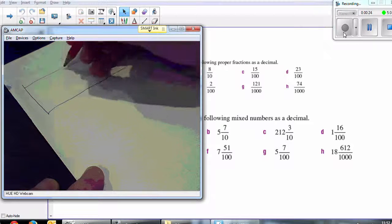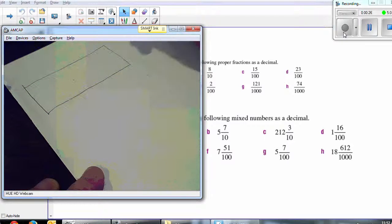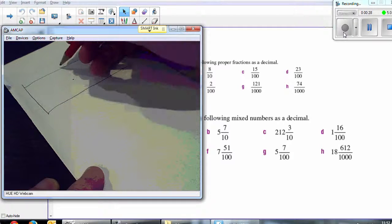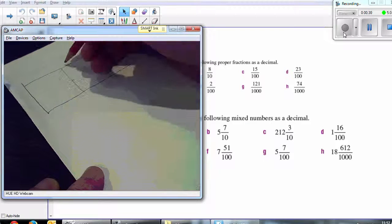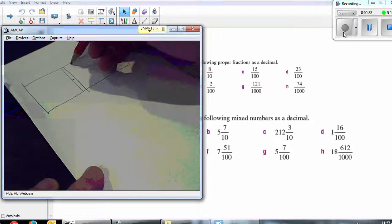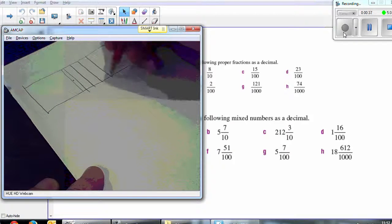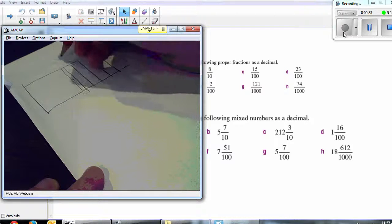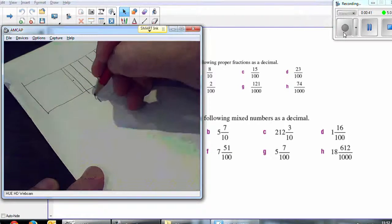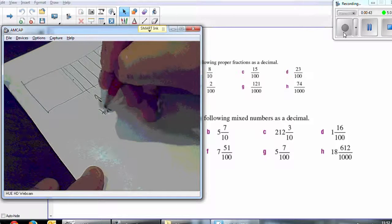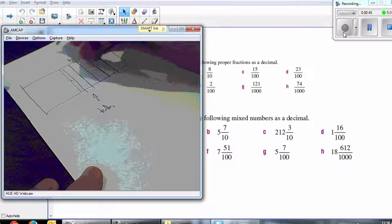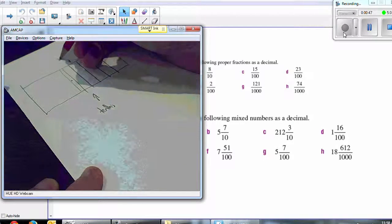In this place value chart, if I put a decimal point right in the middle, like this, and then I'm going to draw up different columns. The first one here is tenths. The second one is hundredths.